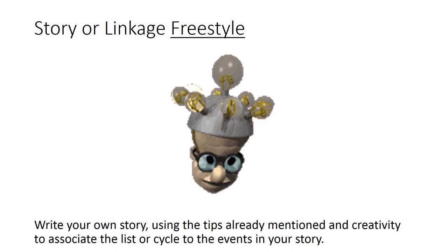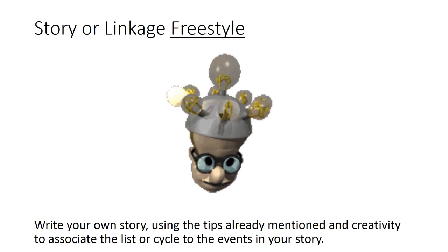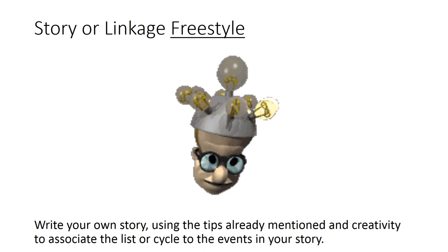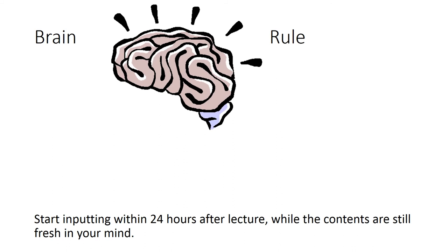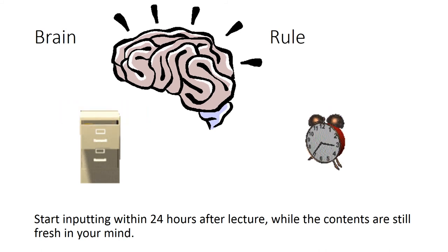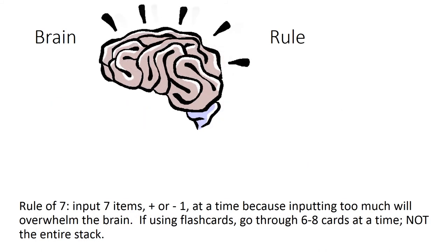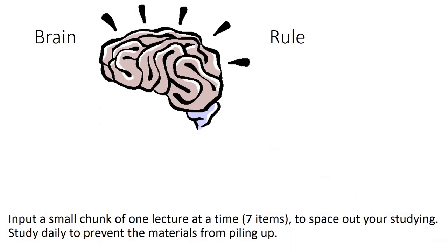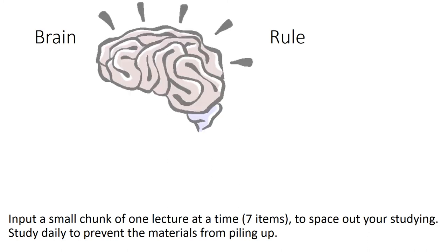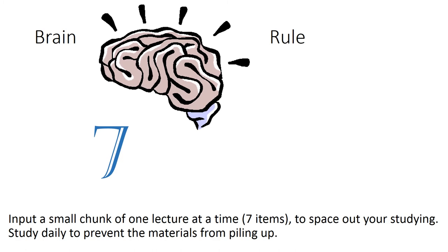Story or linkage freestyle: write your own story using the tips already mentioned and creativity to associate the list or cycle to events in your story. Brain rule: start inputting within 24 hours after lecture while the contents are still fresh in your mind. Brain rule — the rule of seven: input seven items plus or minus one at a time, because inputting too much will overwhelm the brain. If using flashcards, go through six to eight cards at a time, not the entire stack. Input a small chunk of one lecture at a time, like seven items, to space out your study.